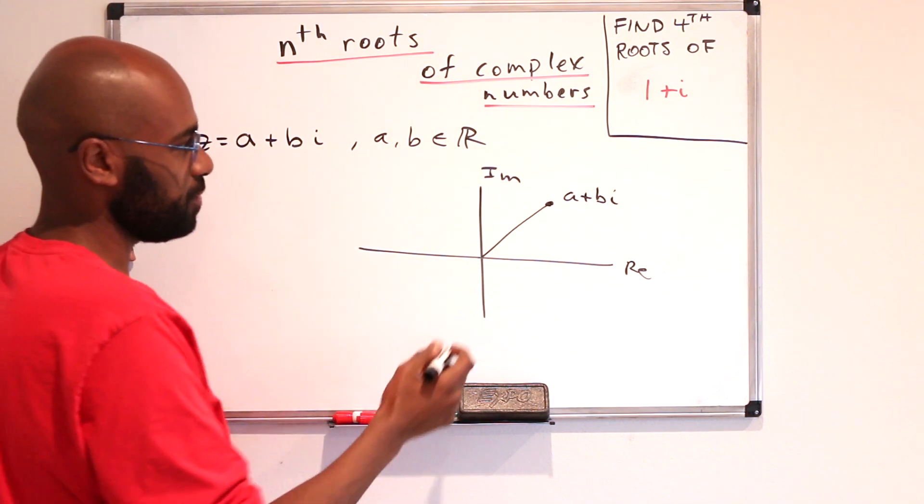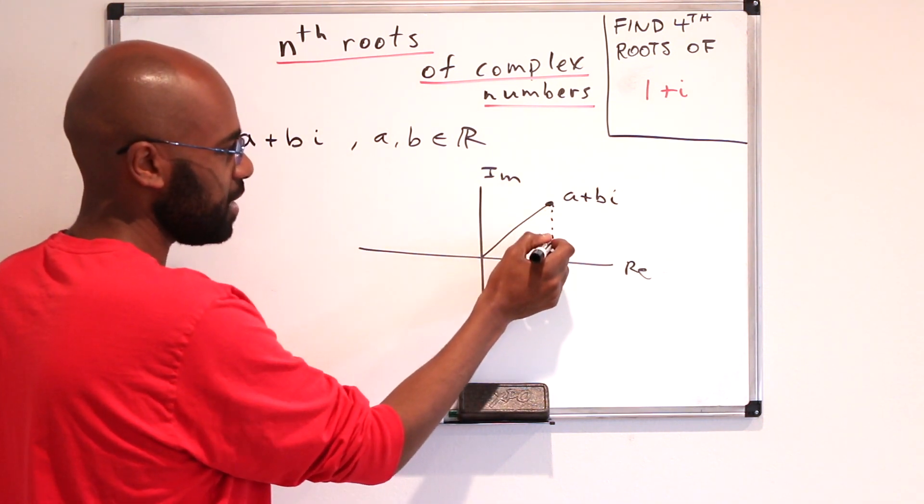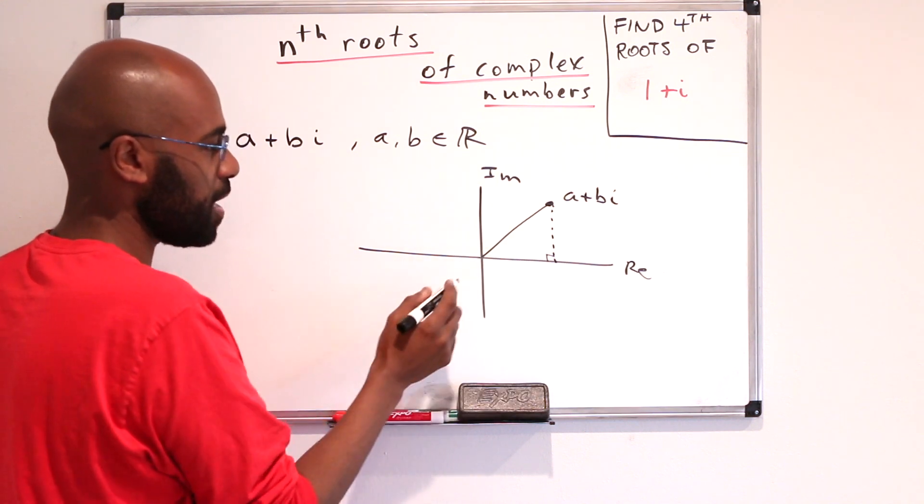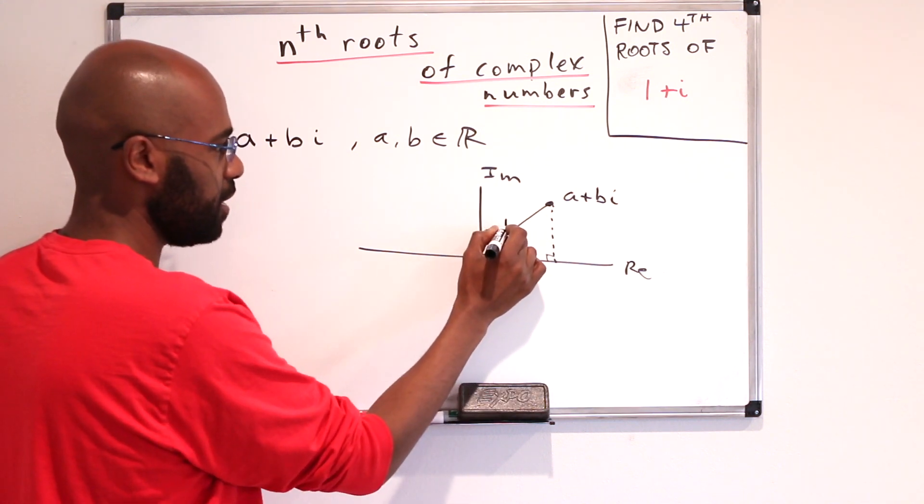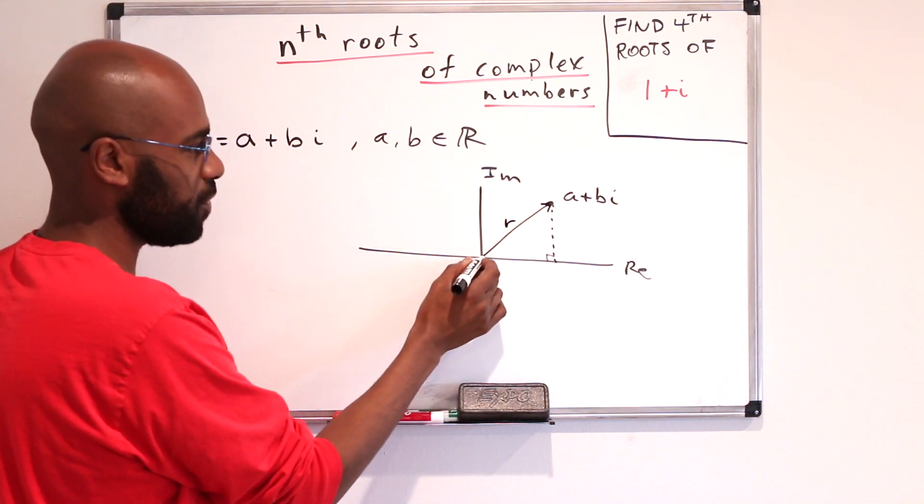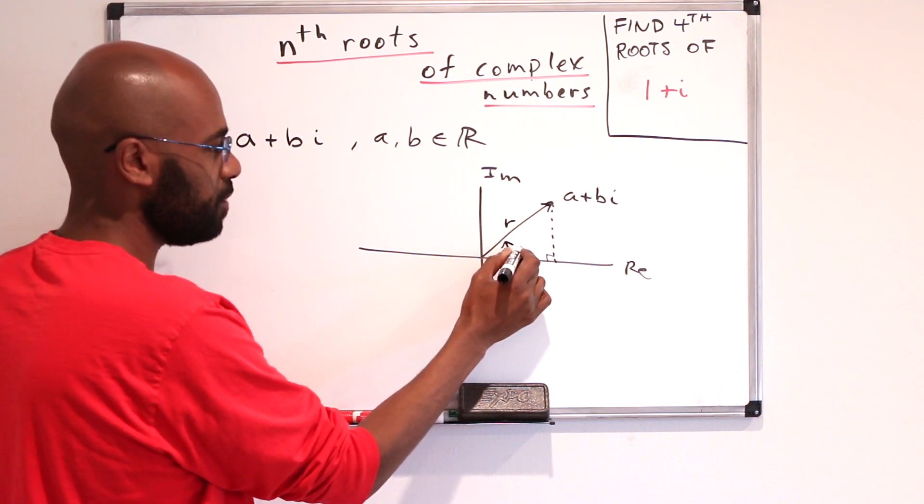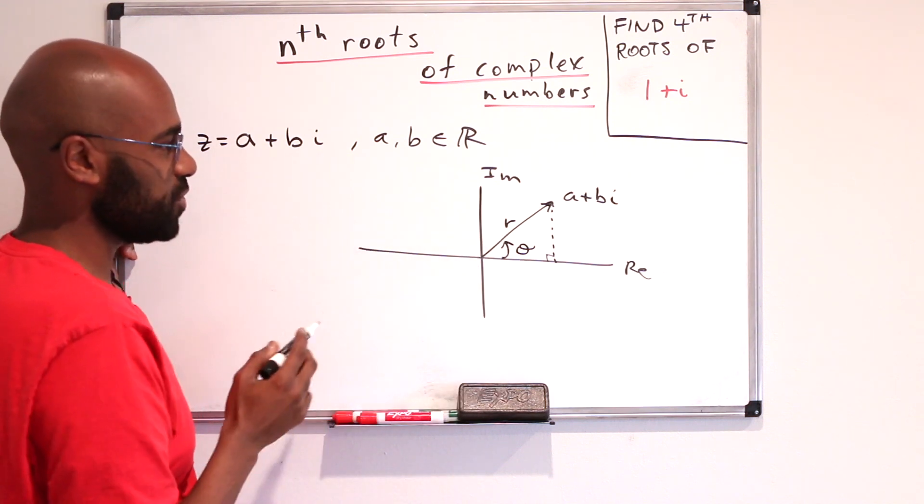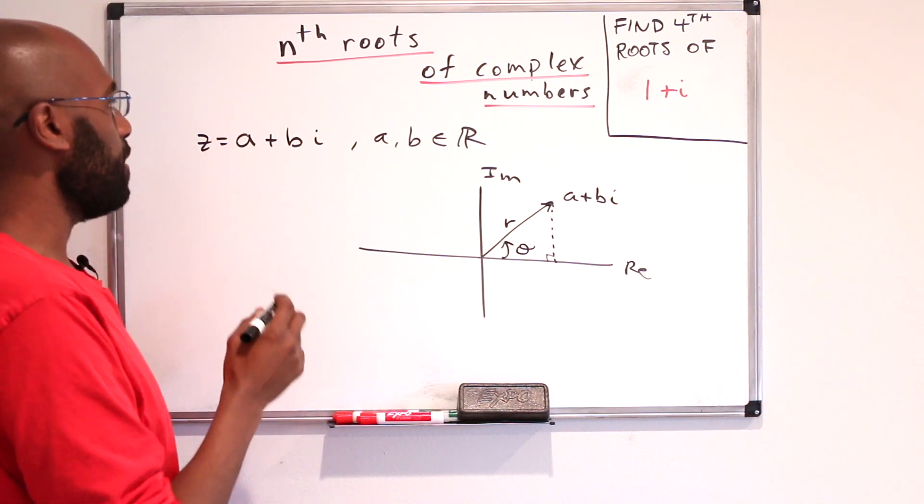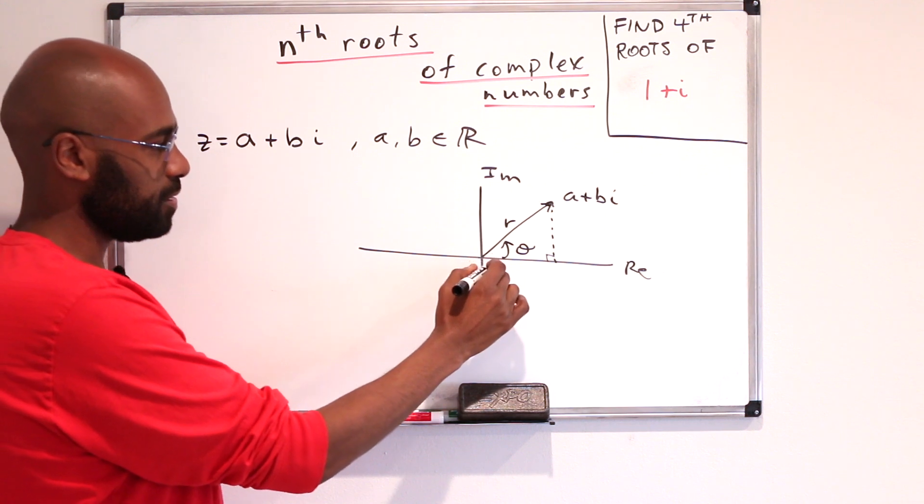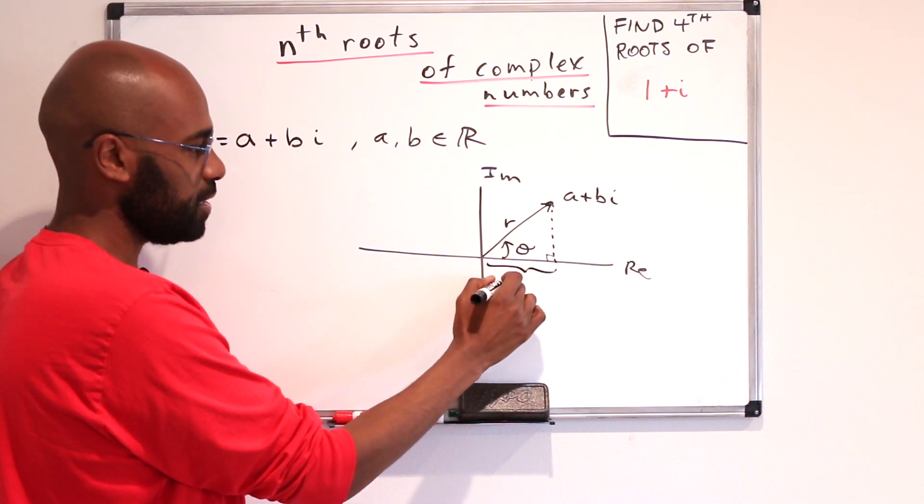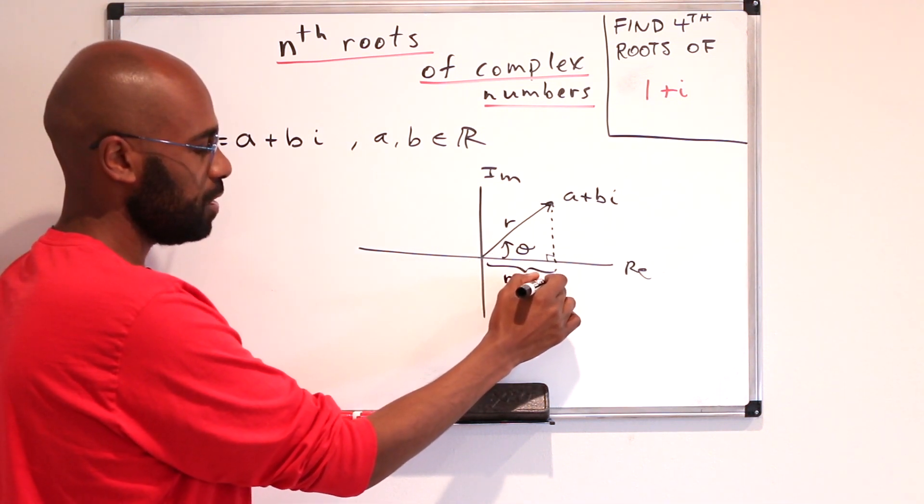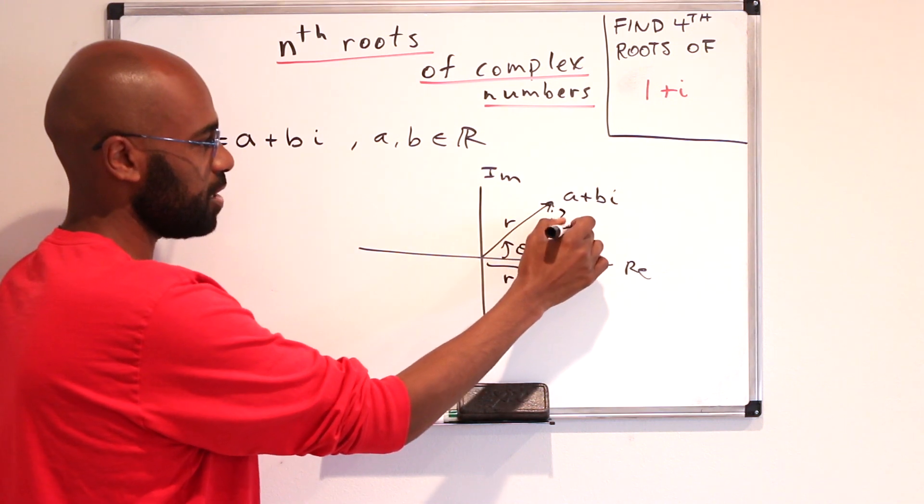There's another way to write complex numbers actually. Instead, we can think about the length of this vector emanating from the origin, I'll call that r, and then the angle that this vector makes with the real axis which I'll call theta. It turns out then that this length here is, by trigonometry, r cosine theta, and this is r sine theta.